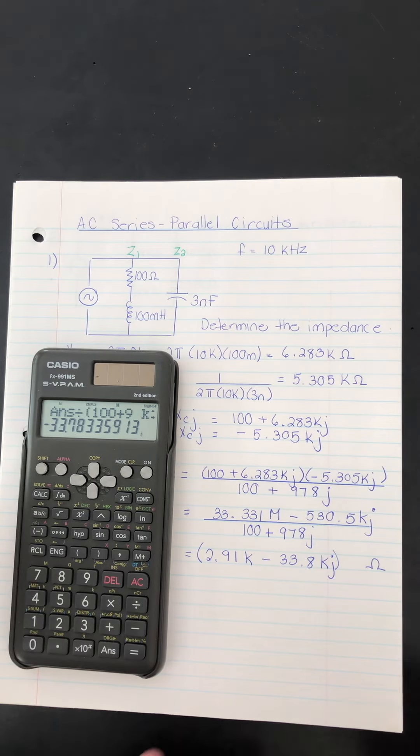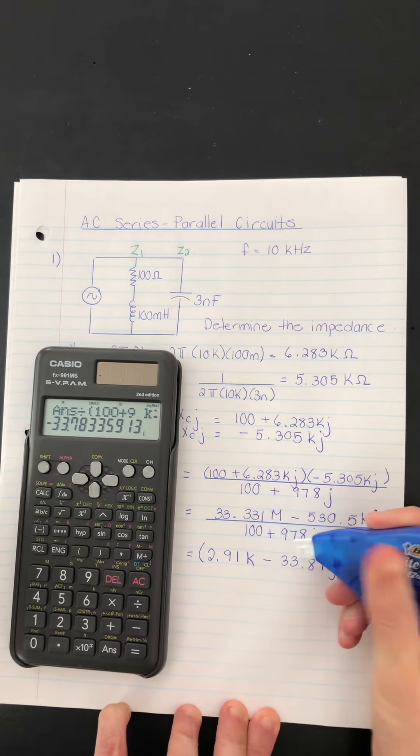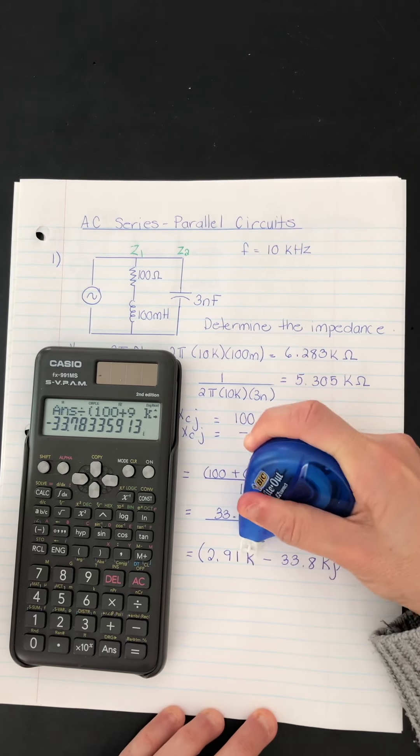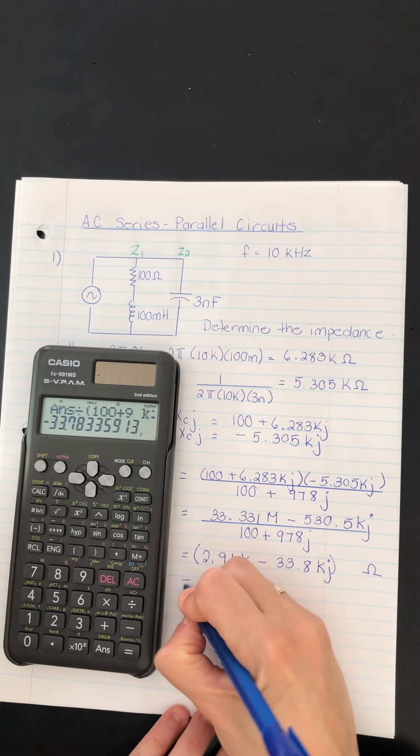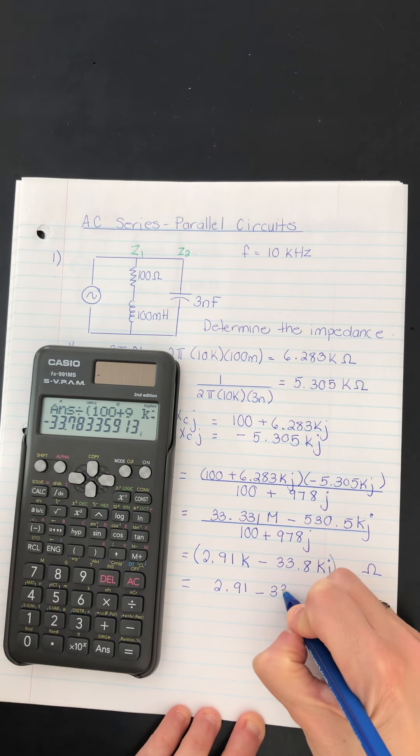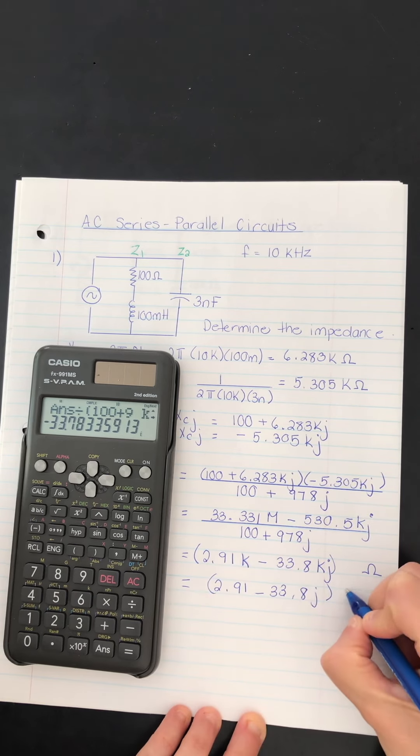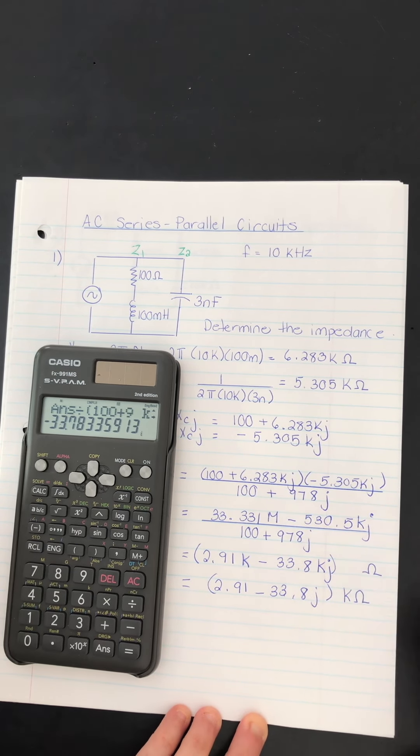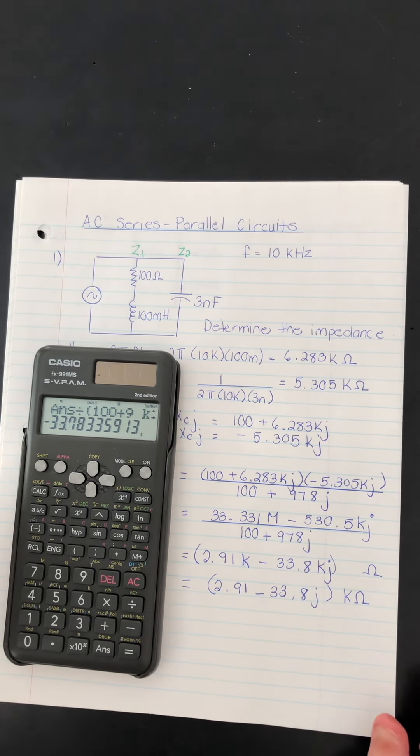And the other way to write that, of course, is with the kilo at the end of the number. I'm not going to be able to use my tape. That's all right. A little bit upsetting for me to tell you the truth, but I'm just going to rewrite it. So this is perfect. Just like that. And that would be the impedance in rectangular form.